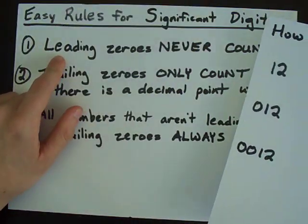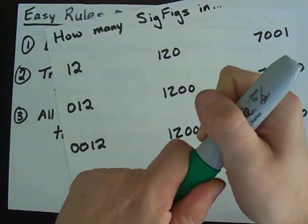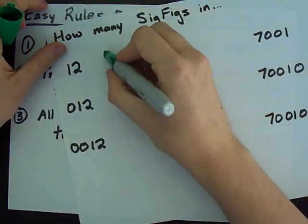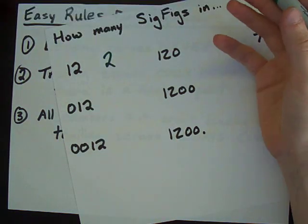Number one, leading zeros never count. This has two significant digits because there are two numbers in it. That's easy.